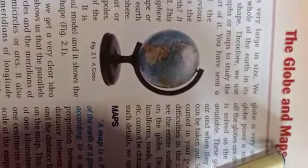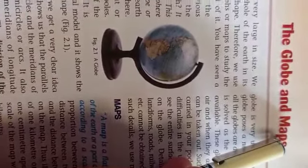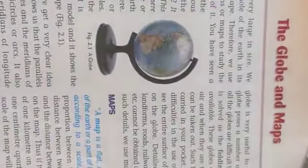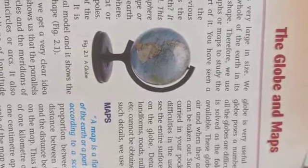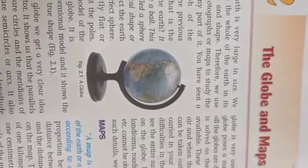And the map is a representation or a drawing of the earth's surface, or a part of it, drawn on a flat surface according to a scale.